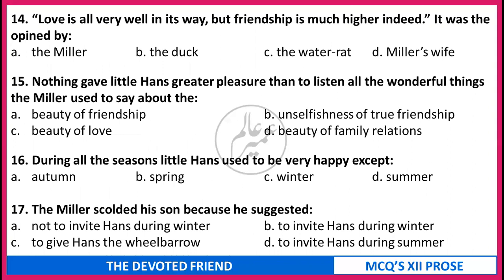'Love is all very well in its way but friendship is much higher indeed' - it was opined by (a) The Miller, (b) The Duck, (c) The Waterrat, (d) Miller's Wife. Nothing gave little Hans greater pleasure than to listen to all the wonderful things The Miller used to say about (a) the beauty of friendship, (b) unselfishness of true friendship, (c) beauty of love, (d) beauty of family relations. During all the seasons little Hans used to be very happy except (a) autumn, (b) spring, (c) winter, (d) summer. The Miller scolded his son because he suggested (a) not to invite Hans during winter, (b) to invite Hans during winter, (c) to give Hans the wheelbarrow, (d) to invite Hans during summer. Correct answers: 14 - The Waterrat. 15 - unselfishness of true friendship. 16 - winter. 17 - to invite Hans during winter.